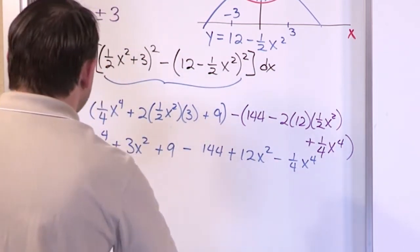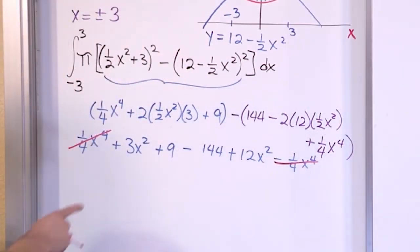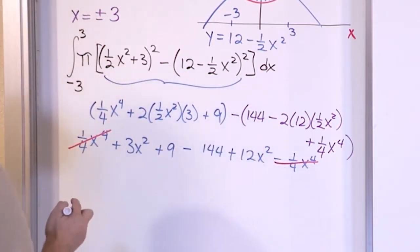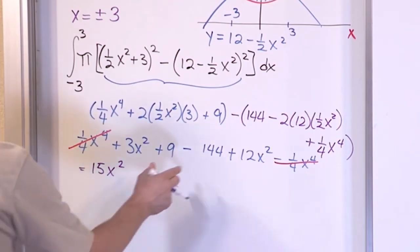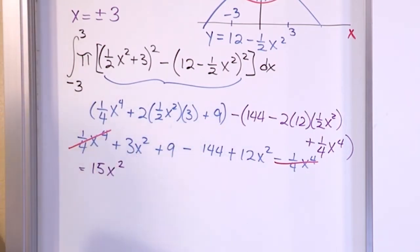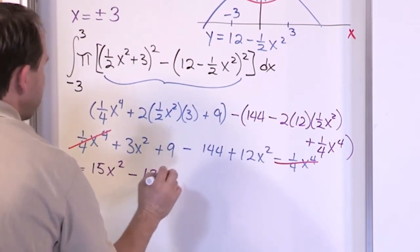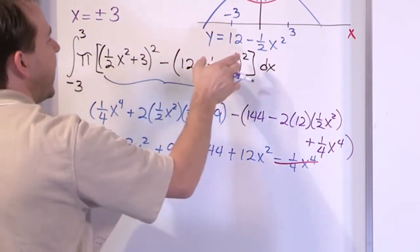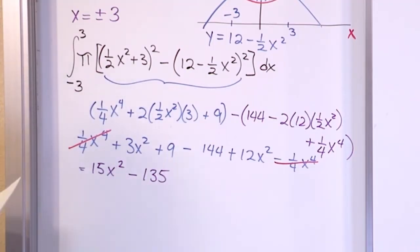Now we simplify. The one-fourth x⁴ and negative one-fourth x⁴ cancel. Combining like terms: 3x² plus 12x² gives 15x². And 9 minus 144 gives negative 135. So the entire expression under the integral simplifies very neatly to 15x² minus 135.